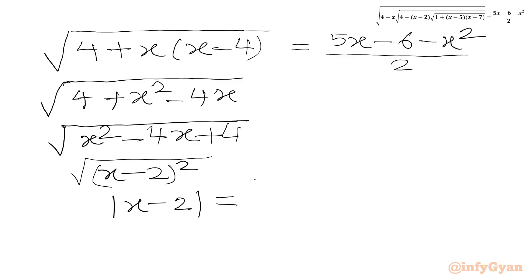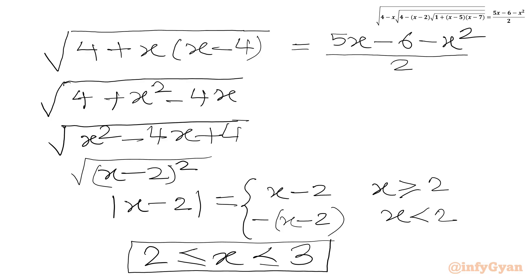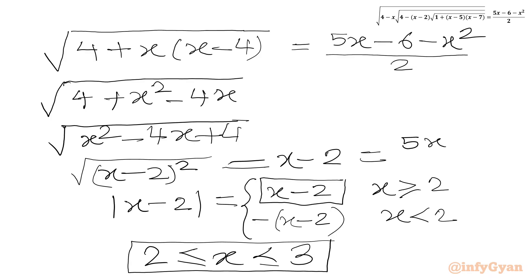Since x is in [2, 3], x is greater than or equal to 2, so |x - 2| = x - 2. Therefore our simplified LHS equals x - 2, and this equals the RHS: (5x - 6 - x²) / 2.